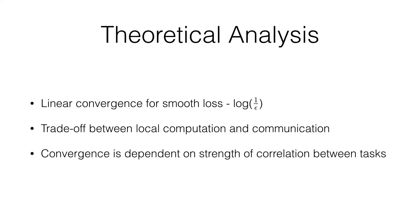Our theoretical analysis shows that distributed optimization in our method converges linearly for smooth losses. It also shows that there is a trade-off between local computation and communication. Moreover, we find that the convergence rate is dependent on the strength of task relationships. When there are stronger task relationships, the convergence rate is slower.